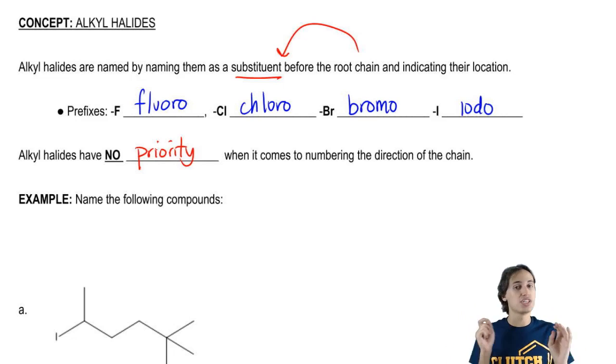Use the same rules that we did before. Just look at the closest substituent. It doesn't matter what it is. It could be a chlorine. It could be a methyl. It doesn't matter. You still make the chain start from the side that has the closest substituent.